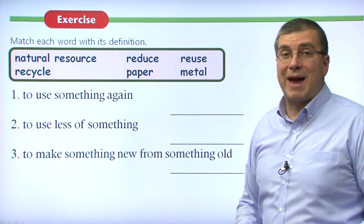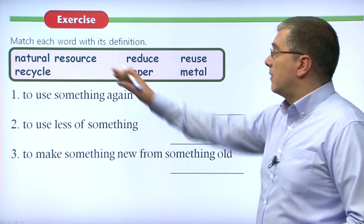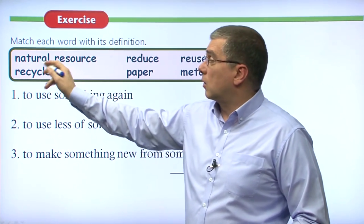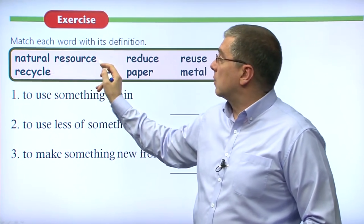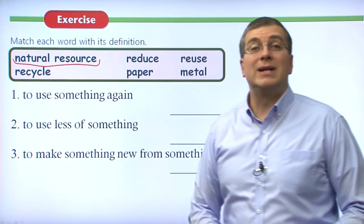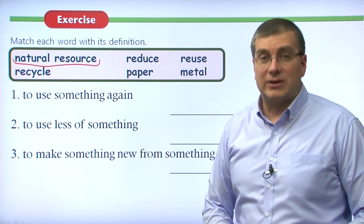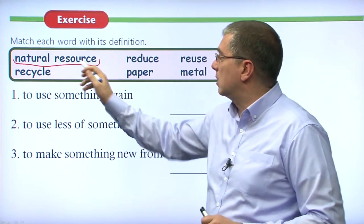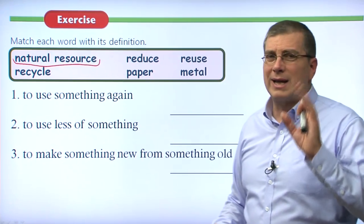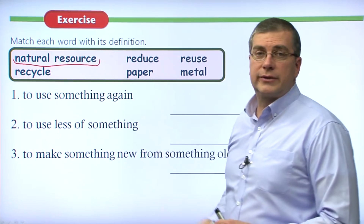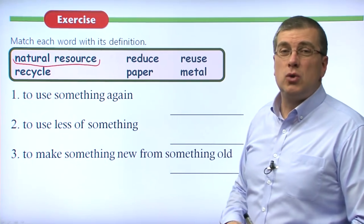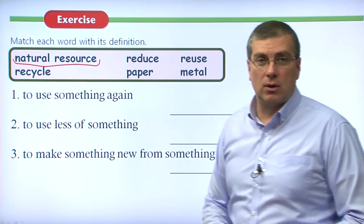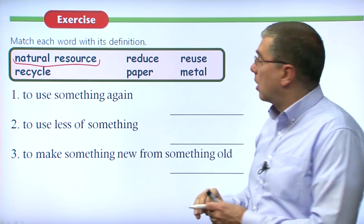Let's go to our word matching exercise. Here we have our words and the definitions we need to match them with. Our words, or phrases, are: natural resource, reduce, reuse, recycle, paper, and metal. Those include the three R's — remember those, very important. Now let's match these to the definitions.